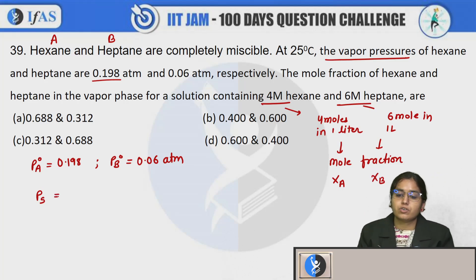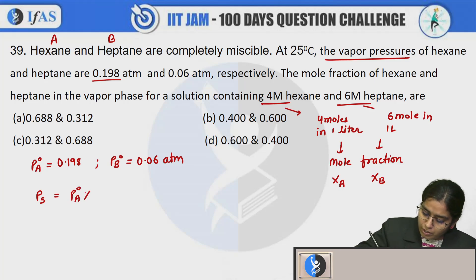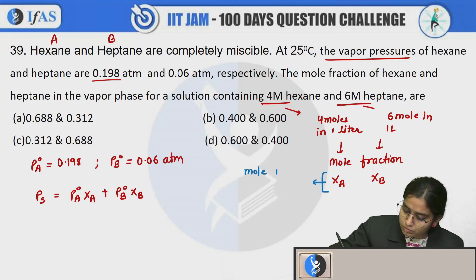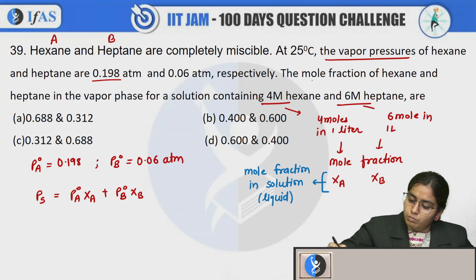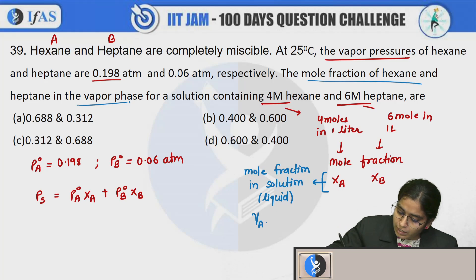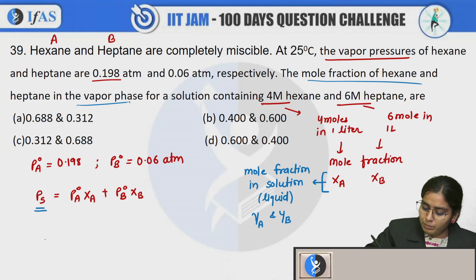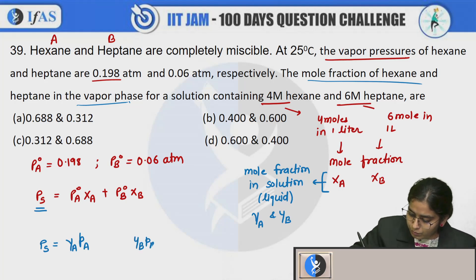You have to use the formula - pressure of solution, total pressure of solution, is equal to P A naught xA plus P B naught xB. This is the mole fraction in solution, liquid phase. When he asked you the mole fraction of hexane and heptane in the vapor phase, meaning he asked you the mole fraction yA and yB. So this is the total pressure you have to remove. What do you have to write? Total pressure of solution is yA into PA plus yB into PB, partial pressure of B. This is the vapor phase formula. So you will have to solve this and then we will remove the solution.